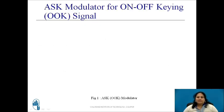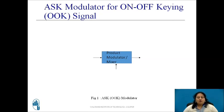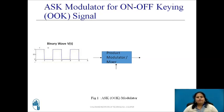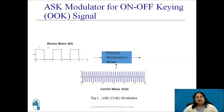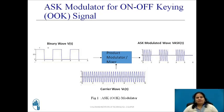Let us see how an OOK signal is generated. In this type of ASK modulator, a simple product modulator, or mixer, or multiplier is used. To one input of this mixer, the input binary bitstream is applied in NRZ coding form with two different voltage levels for logic 1 and 0 as shown in the figure. To the second input, a high frequency sinusoidal carrier signal is applied. The output is simply the product of these two signals. For the bit duration when input is 1, the output is the presence of the carrier signal, whereas for the bit duration when input is 0, the output is the absence of the carrier. Thus, the modulated signal is an on-off keying or OOK signal.